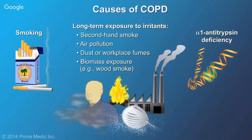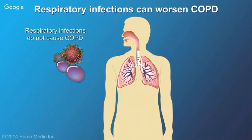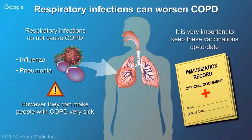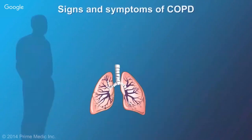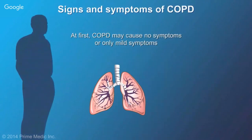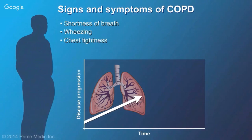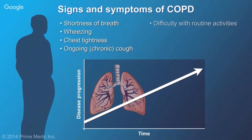An uncommon genetic disorder called alpha-1 antitrypsin deficiency is sometimes associated with COPD. Respiratory infections like influenza and pneumonia don't cause COPD but can make patients very ill, so vaccinations are important. At first COPD may cause no symptoms; as it progresses, symptoms include shortness of breath, wheezing, chest tightness especially with exercise, and an ongoing cough with mucus. Eventually even routine activities like getting dressed or climbing stairs become difficult, leading to fatigue, weight loss, and muscle loss.